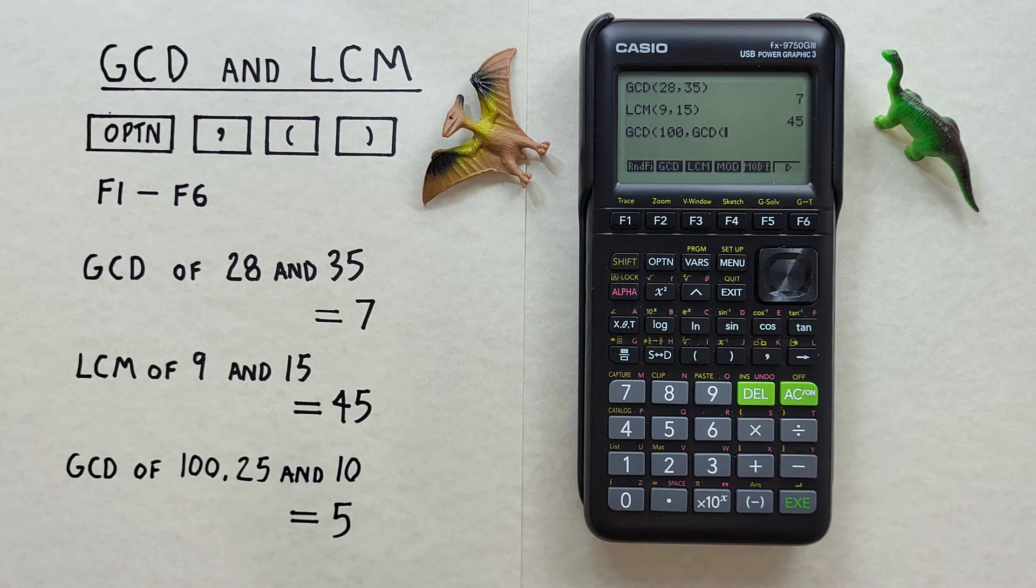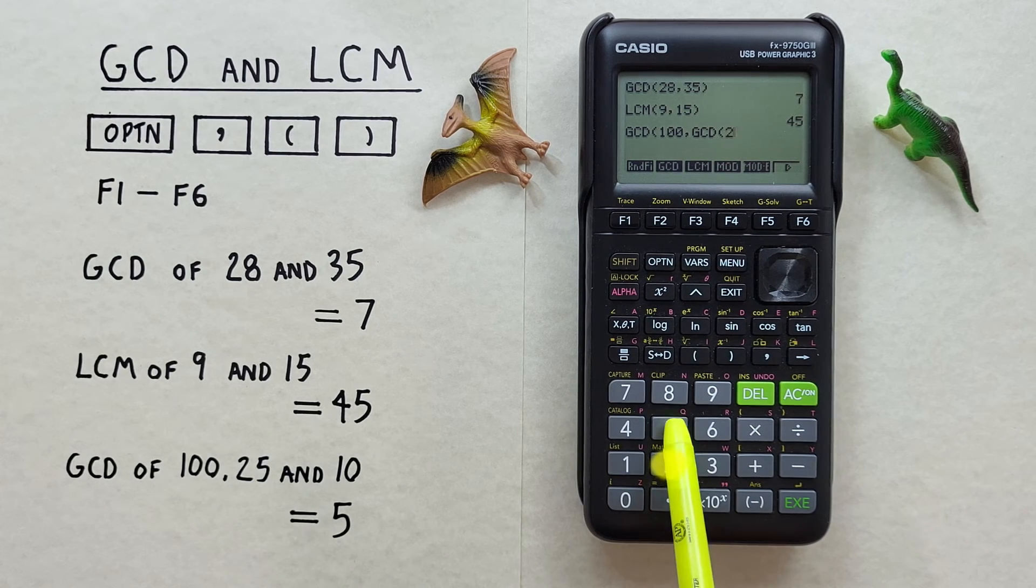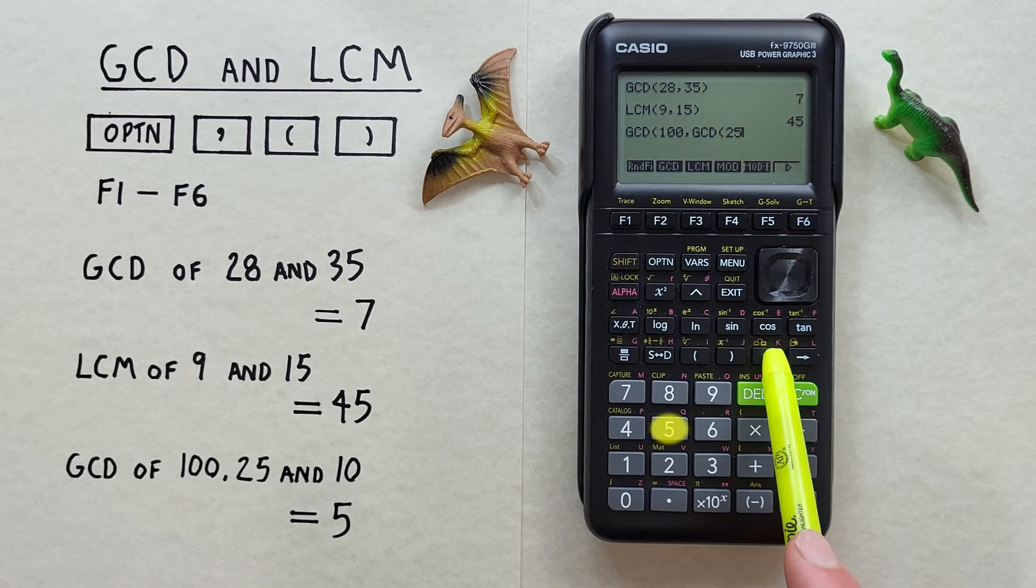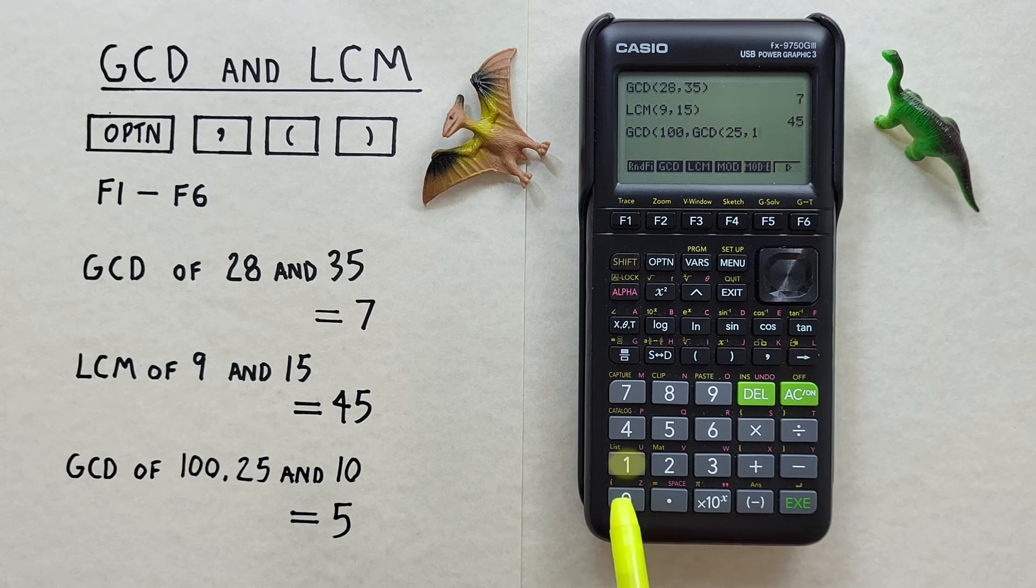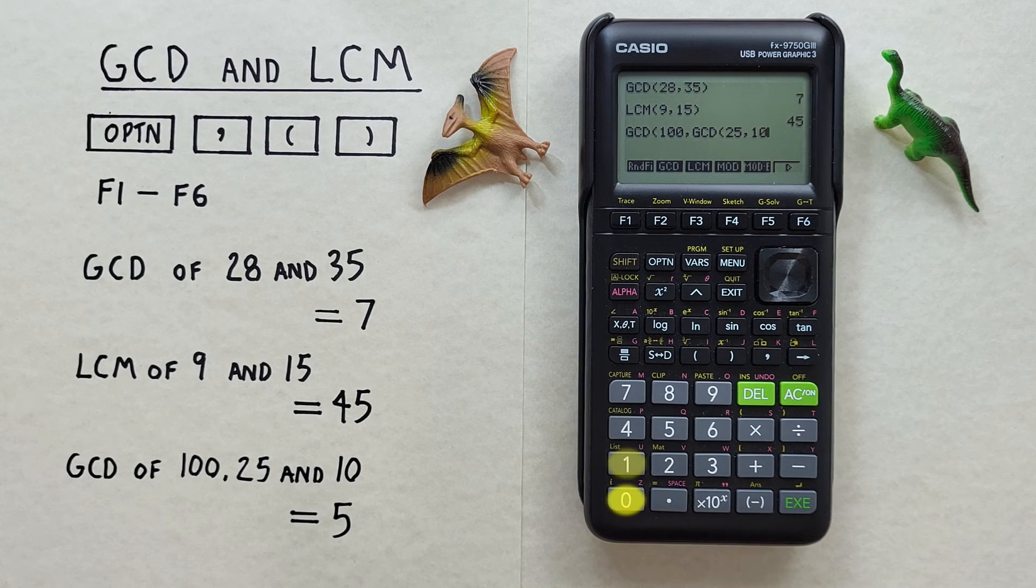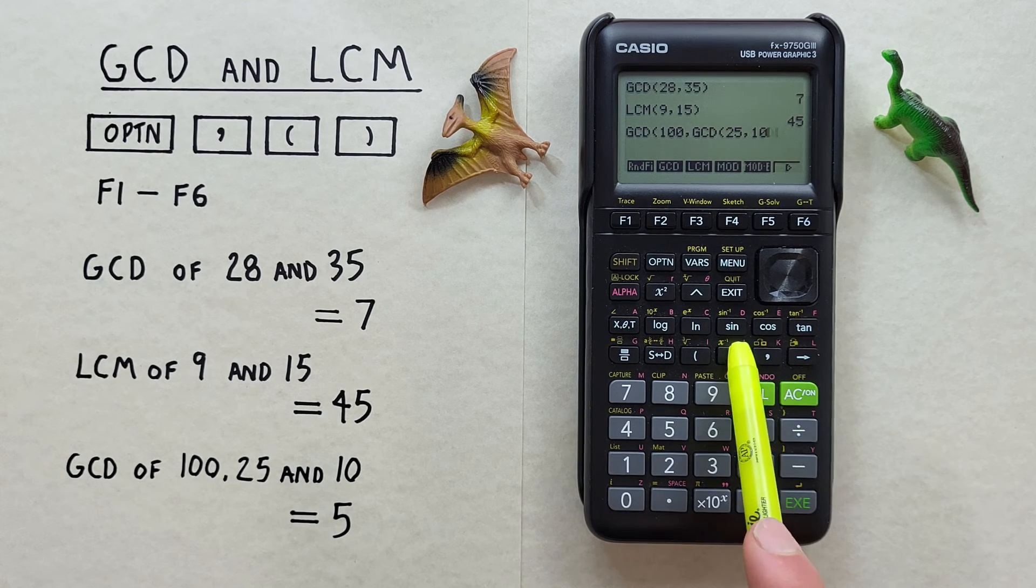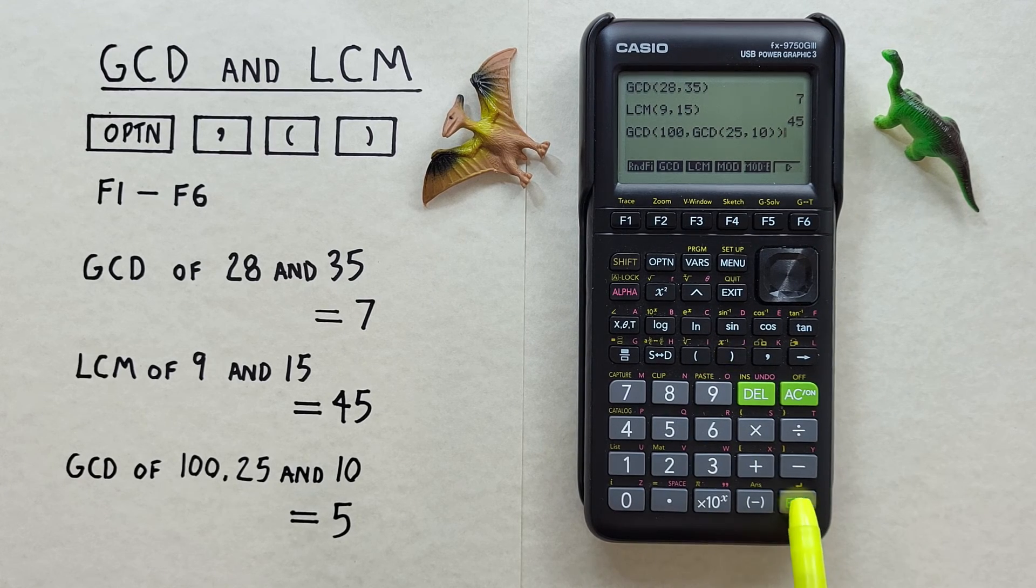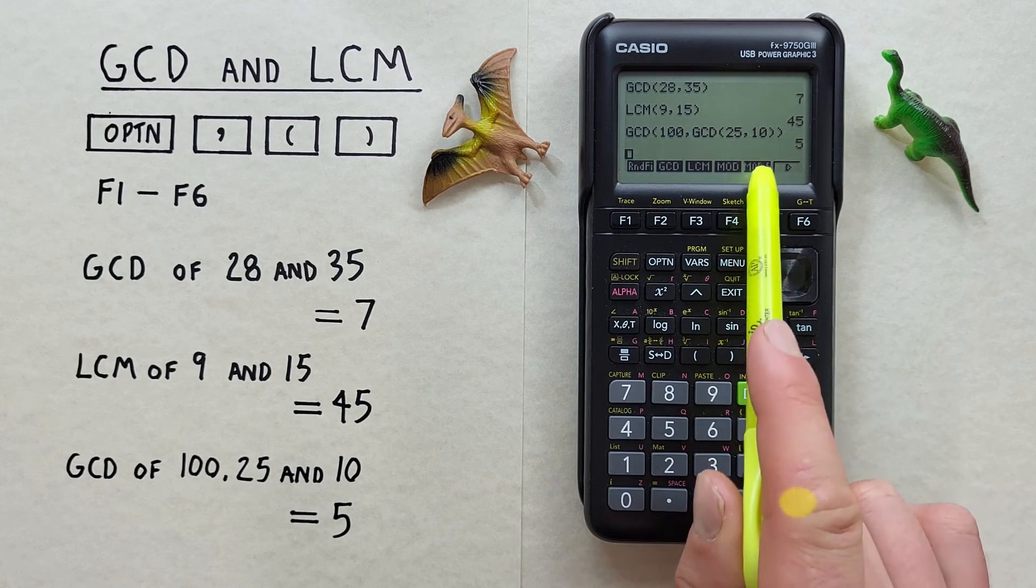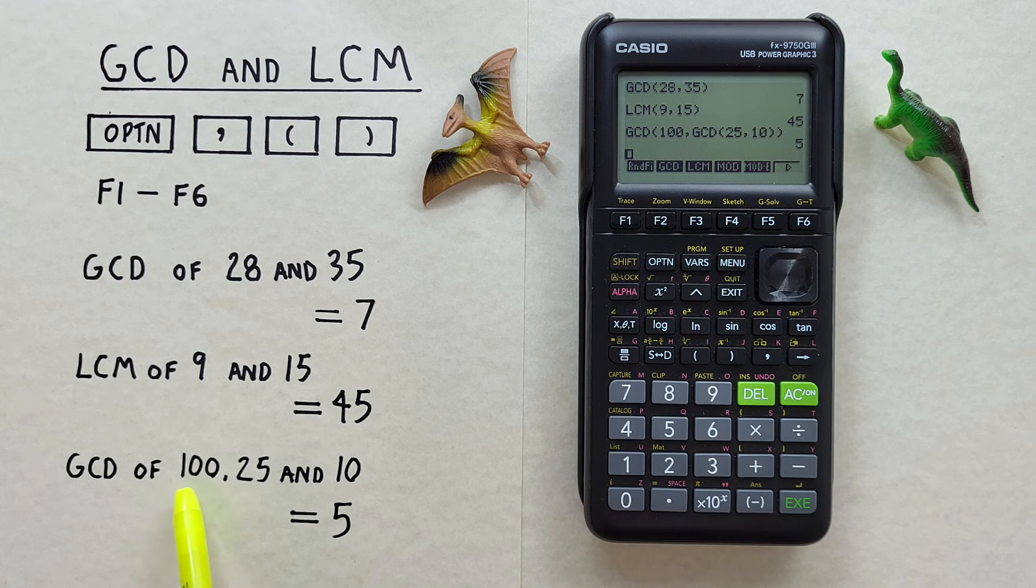then our next number, which was 25, comma, and our last number, which was 10. And then we want to close both sets of brackets and hit EXE. And there we go. The GCD of 100, 25, and 10 is 5.